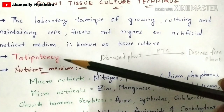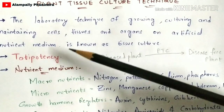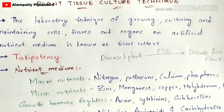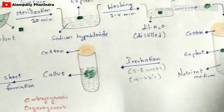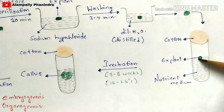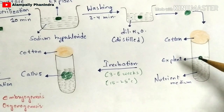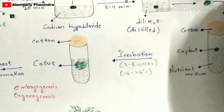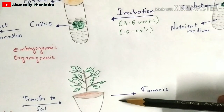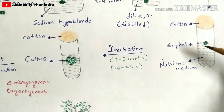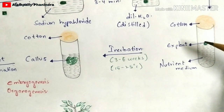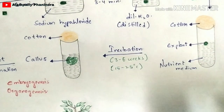One more important concept is totipotency. Totipotency is nothing but the ability of an explant or cell to get developed into a complete mature plant. So the capacity or power of a cell to develop into a complete plant is called totipotency.